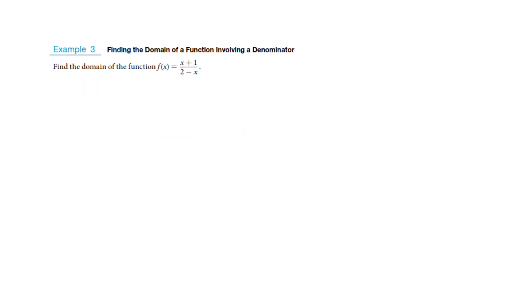Things have changed here. We have a denominator that is not allowed to be zero or else it would break. That's all I care about — the problem is in the denominator. What's on top has nothing to do with it. I'm going to say 2 minus x is not allowed to equal zero. I'll see which values it is not allowed to be — I'll send the x to the other side and find out x is not allowed to be 2.